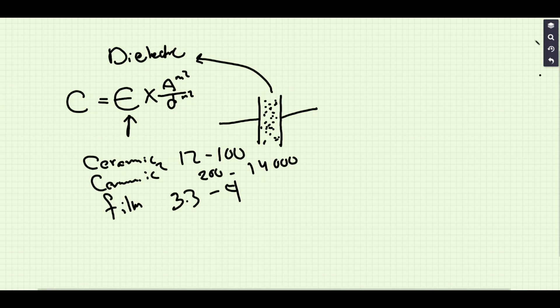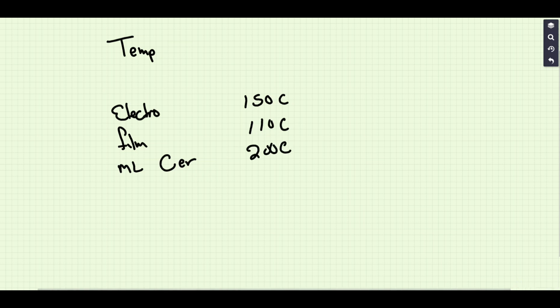Next up is going to be the temperature. Different capacitor types operate at different temperatures. So we have our electrolytics, we have film capacitors, and we have our multi-layer ceramic capacitors. Now our aluminums operate up to about 150°C, the film capacitors about 110°C, and the multi-layer ceramics are good up to 200°C. So that is a factor that you need to consider when choosing the type of capacitor - how hot is it going to be, not just the operating temperature of the circuit itself but the ambient temperature of the environment in which it operates.